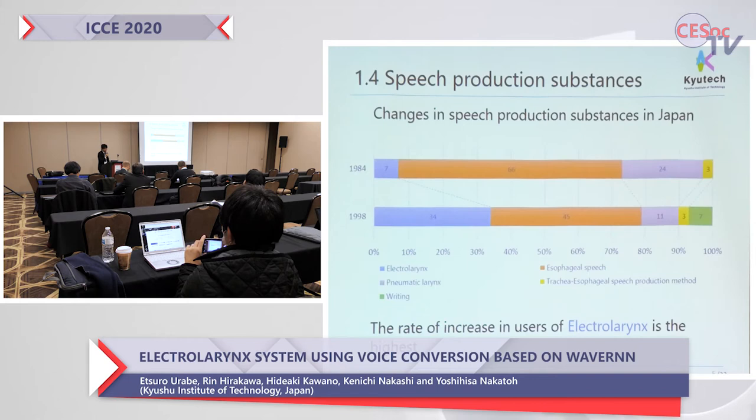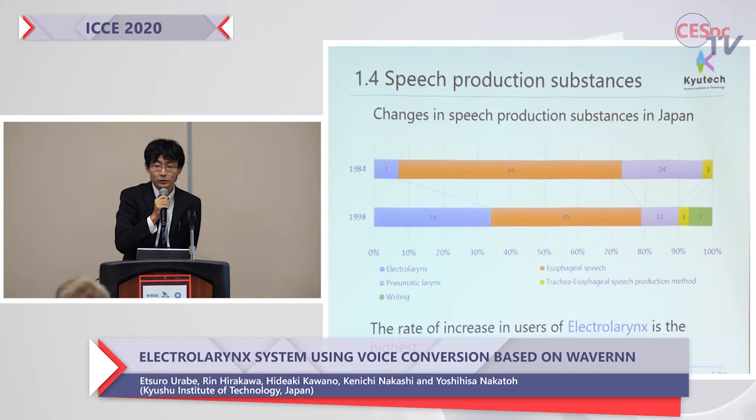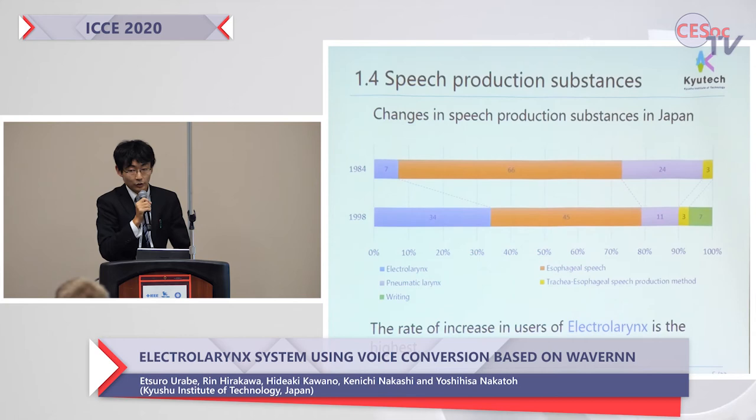This figure shows the changes in speech production substitutes in Japan. The highest percentage is esophageal speech users. However, the rate of increased users of the electrolarynx is the highest. This is due to the features of it.